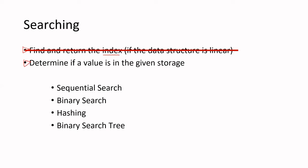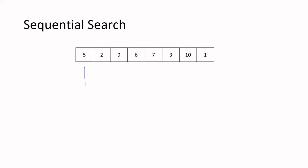There are several different types of algorithms we will cover, including sequential and binary search. Hashing is not specifically for searching — it can be used for other tasks like encryption — but it's commonly applied to searching tasks so we'll include it here. The last one would be binary search tree.